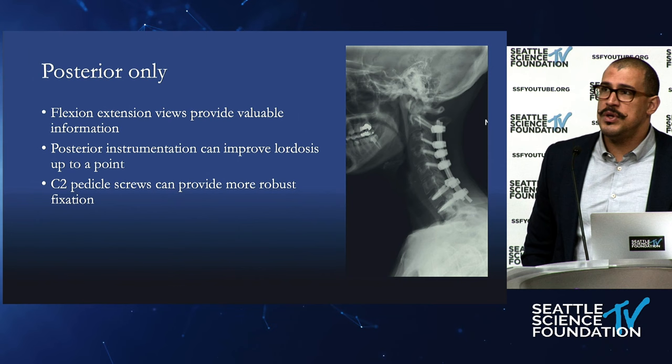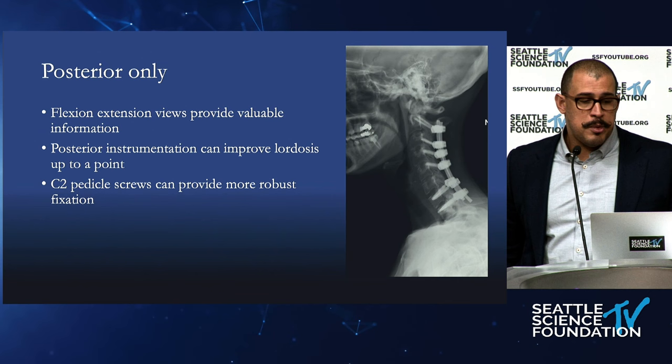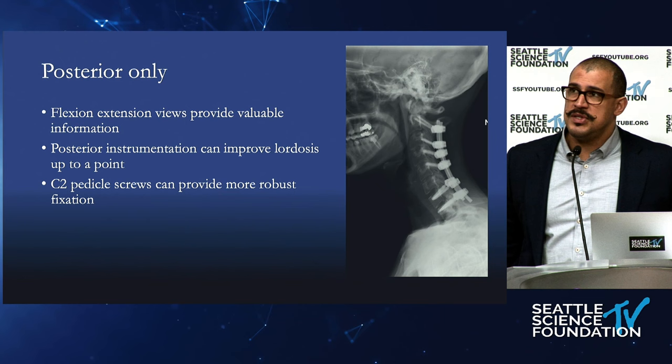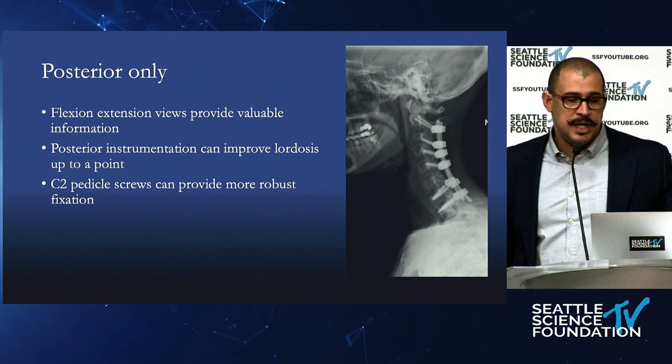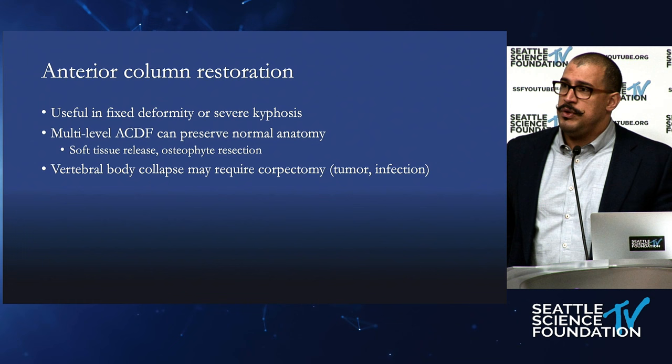Posterior-only is very viable — you can correct cervical deformity with just a posterior fusion. I really like to look at flexion-extension views to see if the deformity is correctable dynamically. Even if someone is in neutral alignment on standing films, if they can correct on extension, that tells me I can get more correction from a posterior-only approach. Use of very strong C2 screws, such as pedicle screws, gives more fixation — if you're using a pars-type screw, your risk of pullout is higher when relying on posterior-only instrumentation.